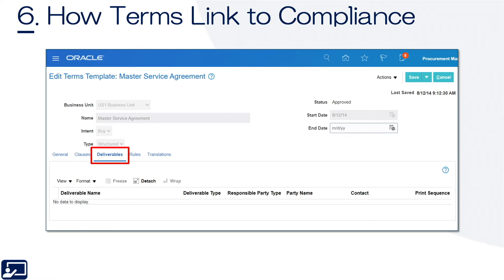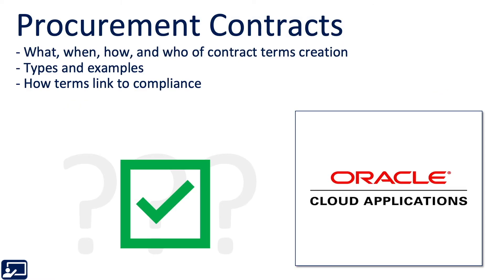You can link compliance tasks directly, on the fly, or link the deliverables to the different terms, as shown here. So that's it for procurement contract terms. You should now know the what, when, how, and who of contract terms creation, the types and examples, and also how terms link to compliance.